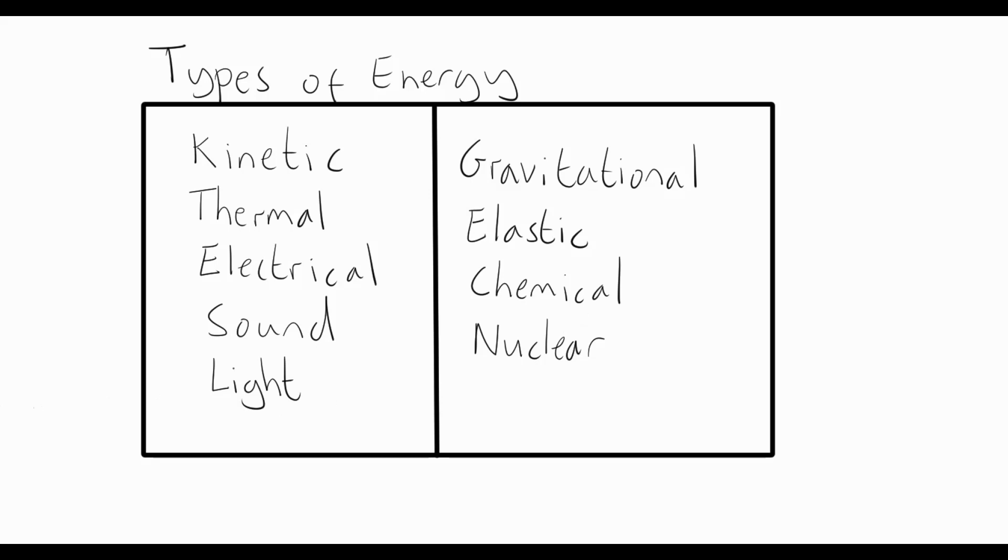I've deliberately put them into two groups here. On the left-hand side, we've got kinetic, thermal, electrical, sound, and light. And on the right-hand side, we've got gravitational, elastic, chemical, and nuclear. The main difference between these two columns is that the energies on this side can all be stored. The gravitational energy can be stored by just holding something up in a higher place, for example, on a high shelf. Elastic energy can be stored when the bow is drawn. Chemical energy is stored in the chemicals until there is a reaction, and nuclear energy is stored inside the nucleus until it's converted.